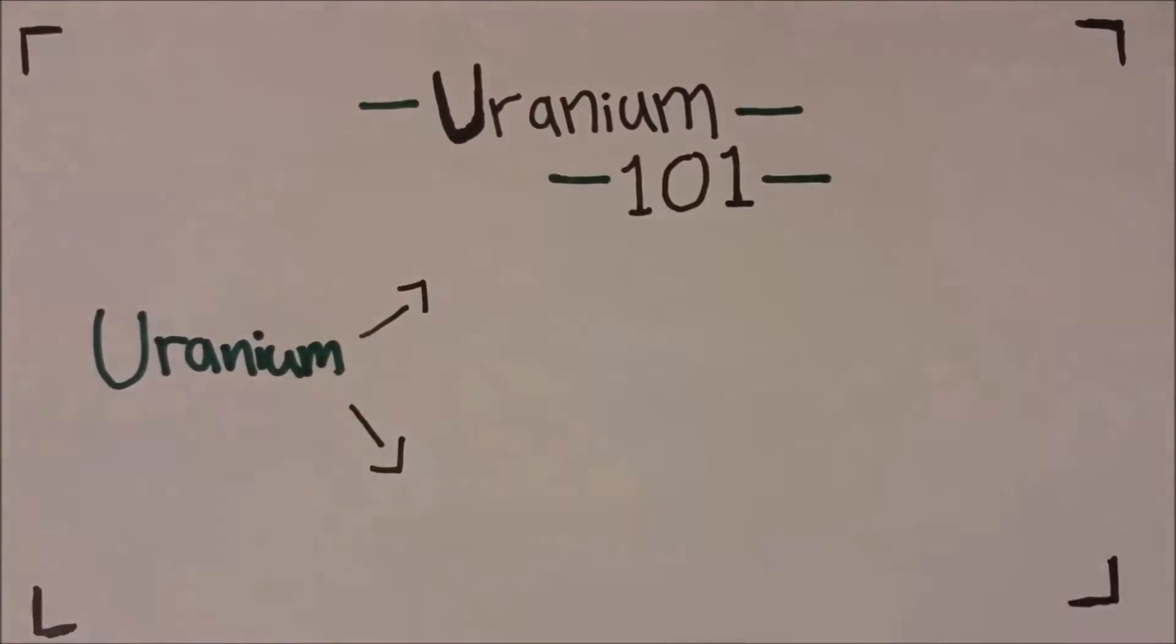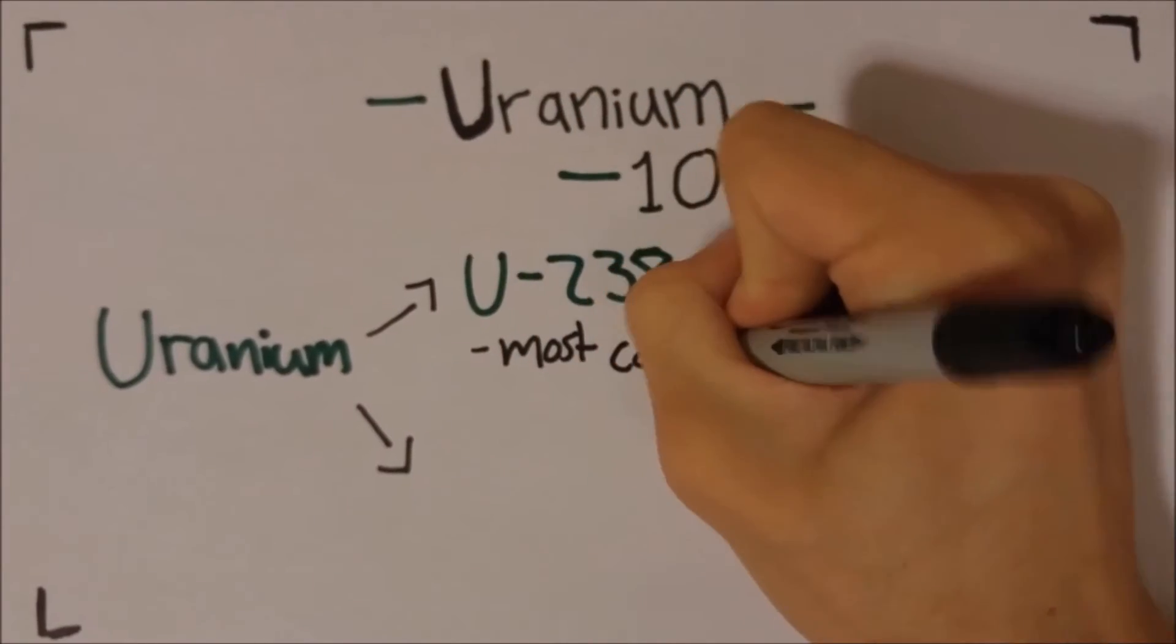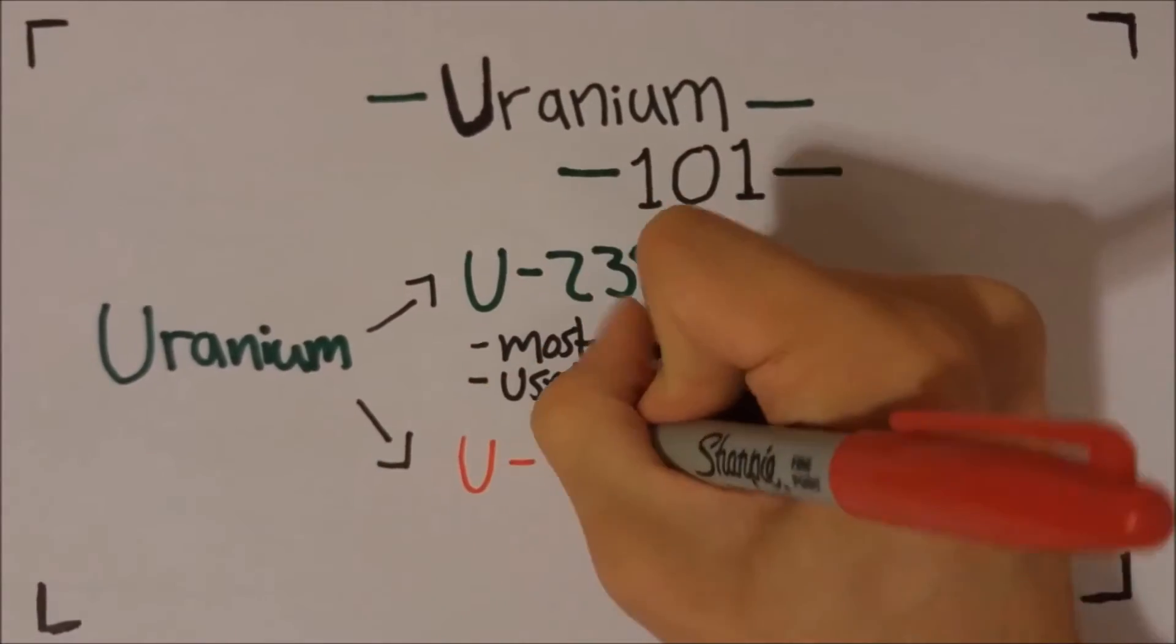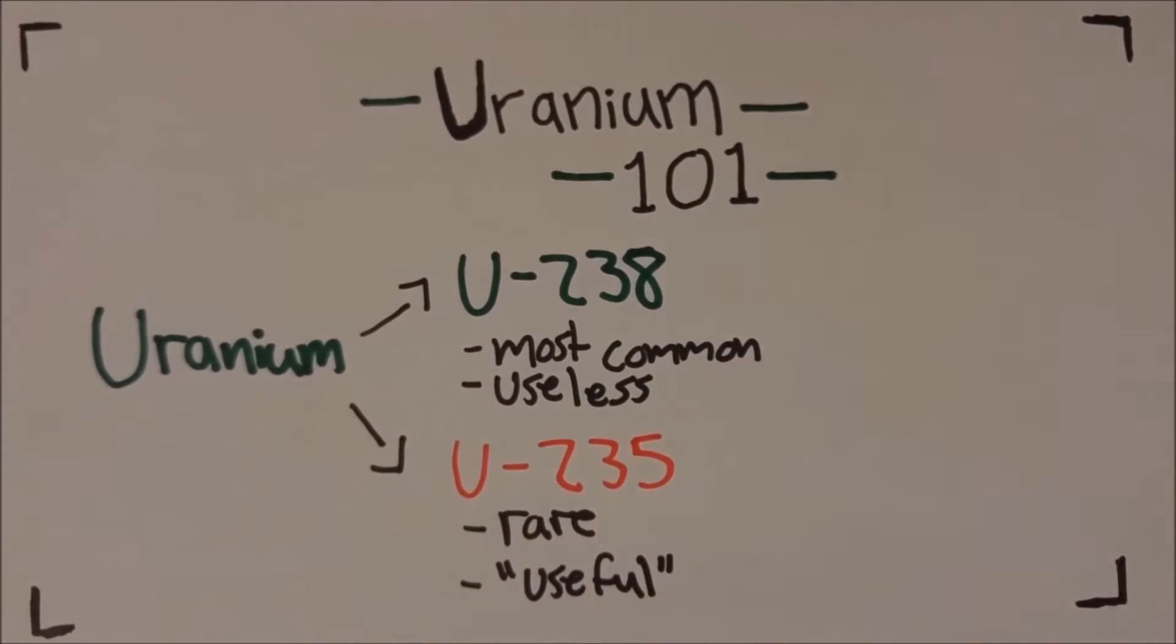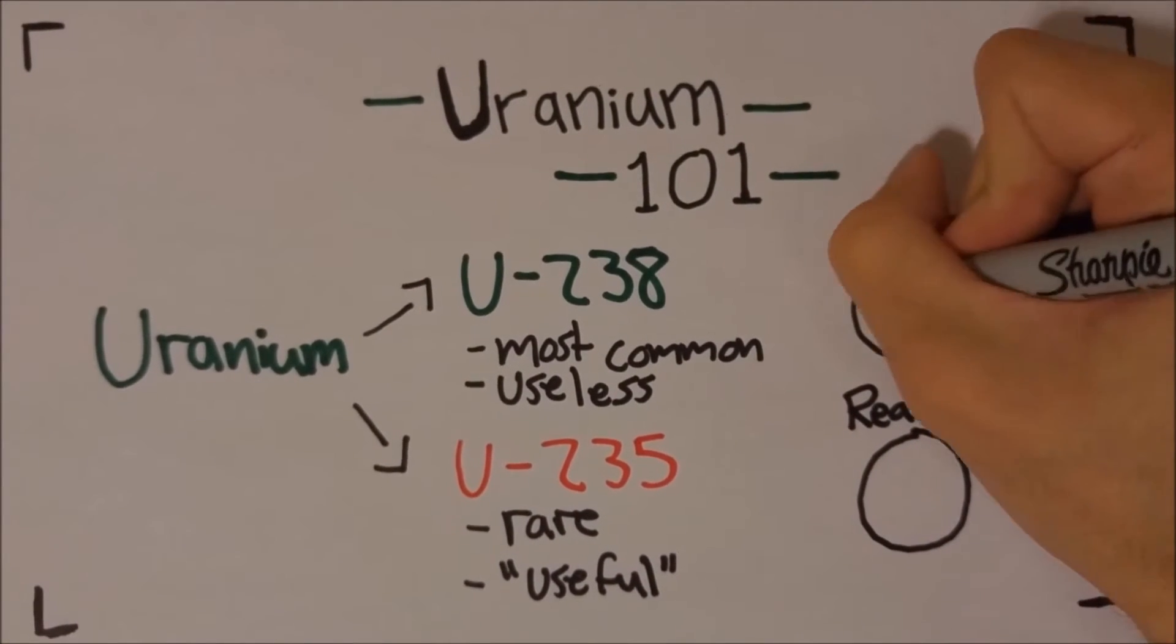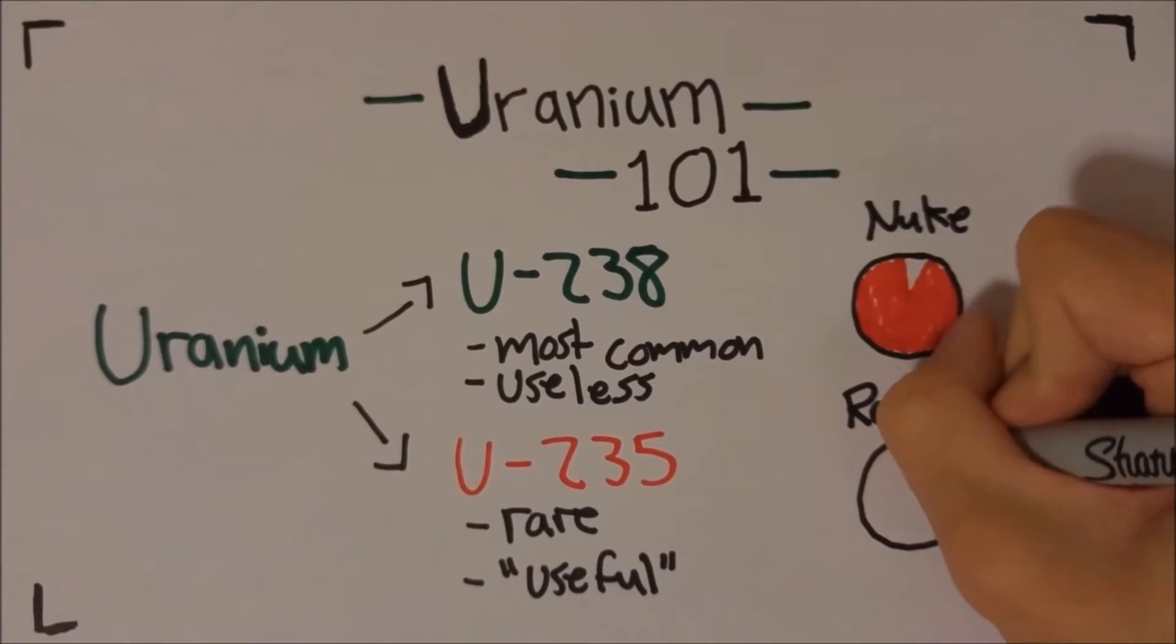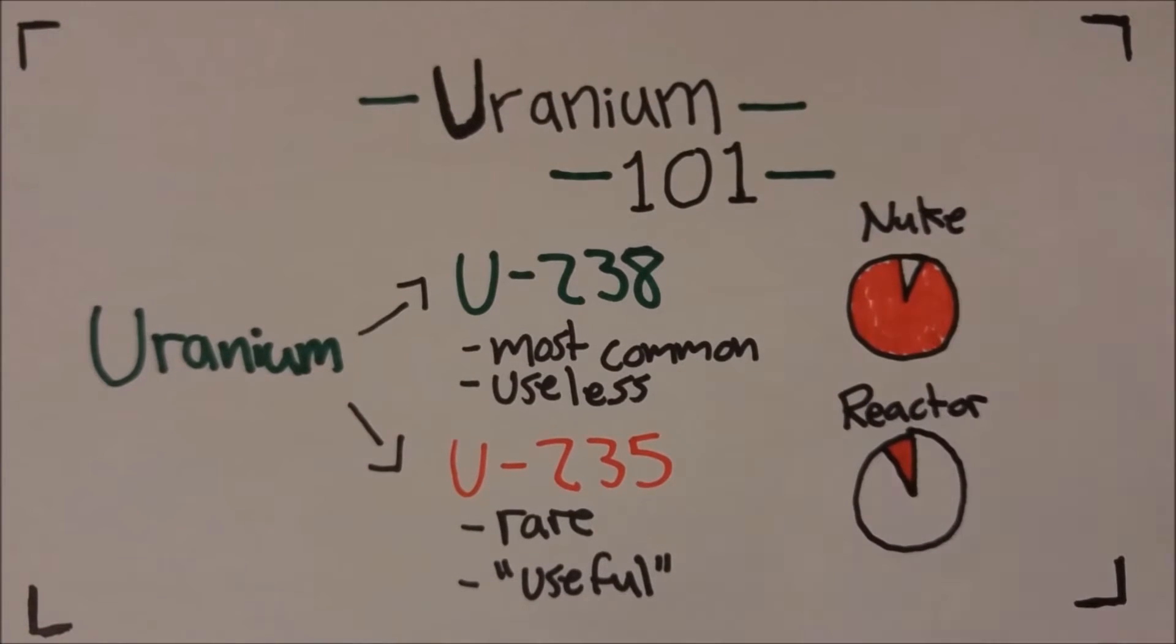Now, it should be noted that it's physically impossible for a nuclear reactor to explode like a nuke. This is because of the concentration of useful uranium within the fuel, or the amount that can actually undergo fission. The uranium used in nuclear weapons has a concentration of about 90% useful uranium, whereas reactor fuel has a mere 3-8%. The amount of useful uranium in reactor fuels is enough to keep them hot, but not nearly enough for them to explode. Let's get this straight, there's no way a reactor can go off like a nuke.